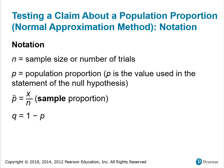Some notation: N is the sample size or number of trials; P is the population proportion, P is the value used in the statement of the null hypothesis; P-hat equals X over N, which is the sample proportion; and Q is equal to 1 minus P.